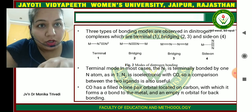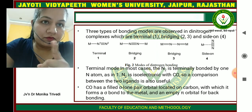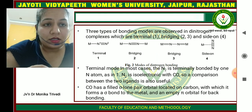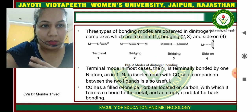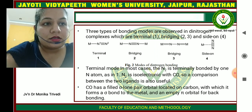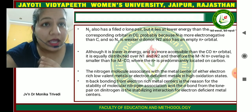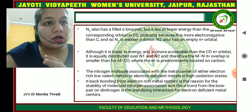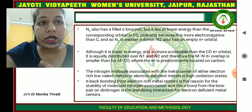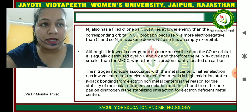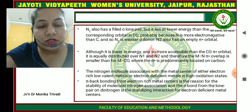In the terminal mode, in most cases N2 is terminally bonded via one N atom. N2 is isoelectronic with CO. Comparing these two ligands: CO has a filled sigma lone pair orbital located on the carbon, with which it forms a sigma bond to the metal, and an empty pi* orbital for backbonding. In the case of N2, it also has a filled sigma lone pair but it lies at lower energy than the corresponding orbital of CO, probably because nitrogen is more electronegative than carbon, and so N2 is a weaker sigma donor. N2 also has an empty pi* orbital; although it is lower in energy, it is equally distributed over N1 and N2.